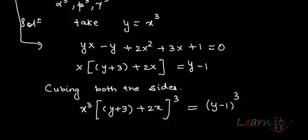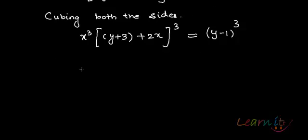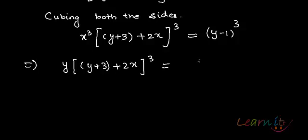In place of x cube, I can write y. So this implies that y into (y + 3 + 2x) whole cube equals to (y - 1) whole cube.